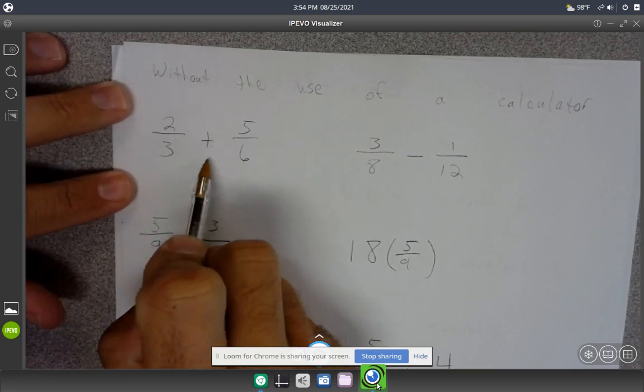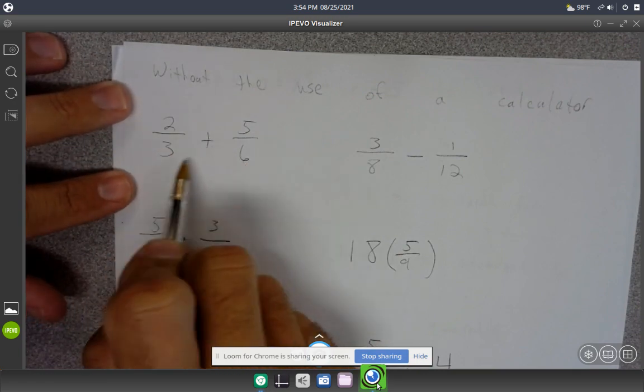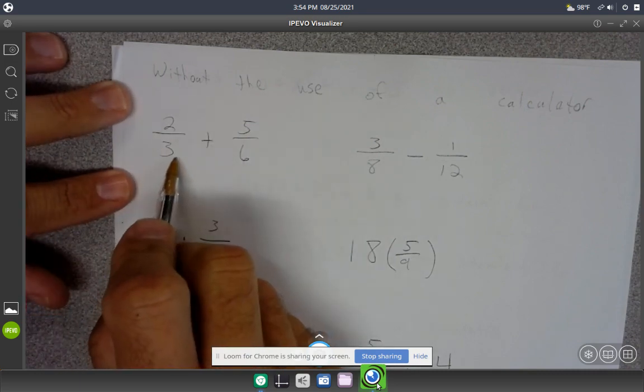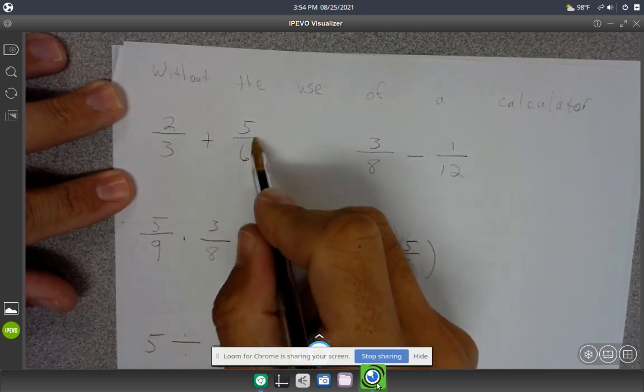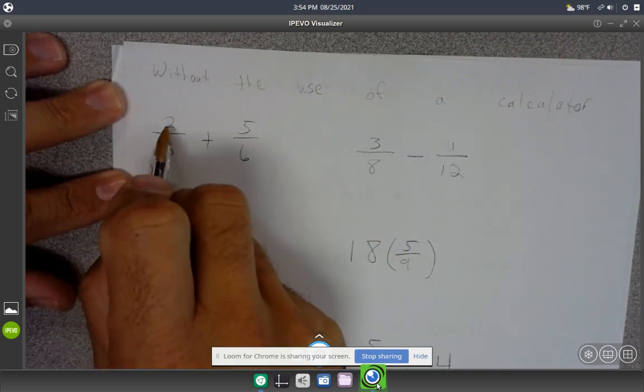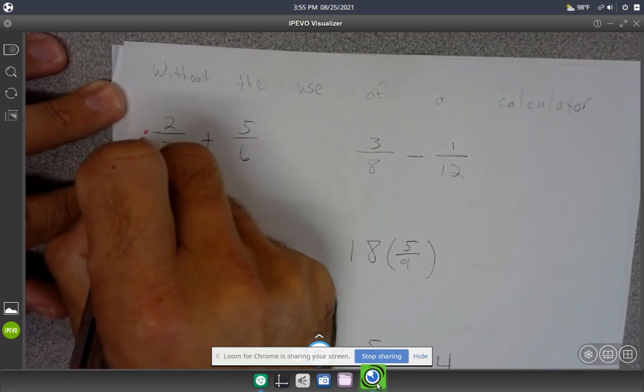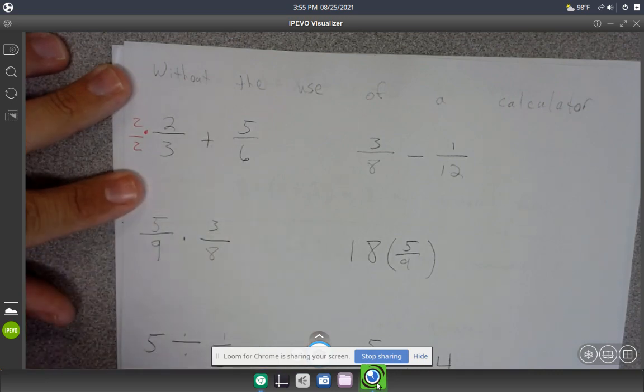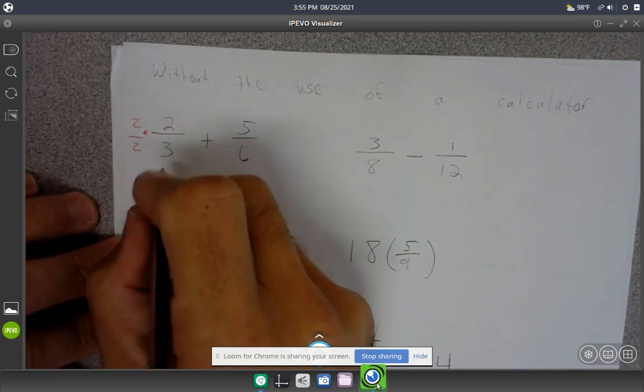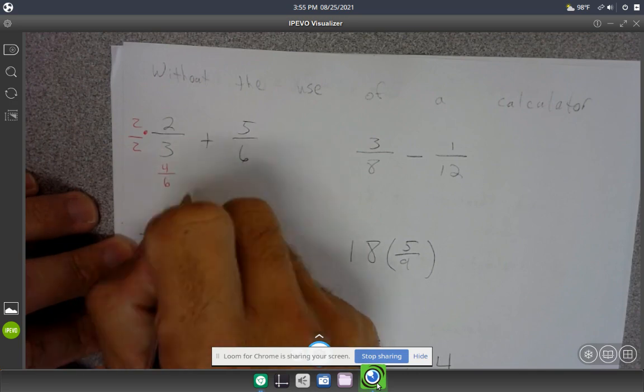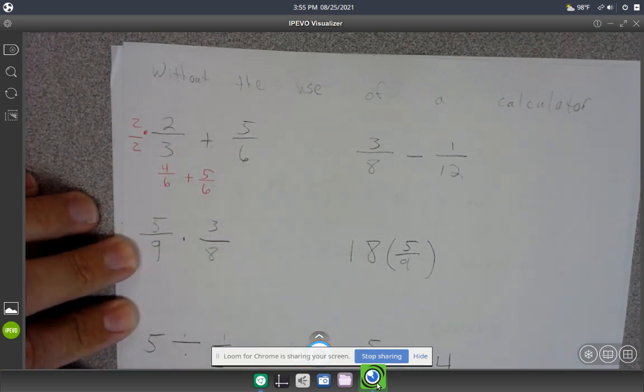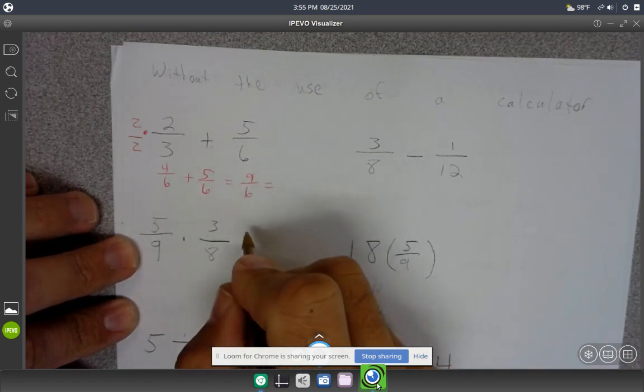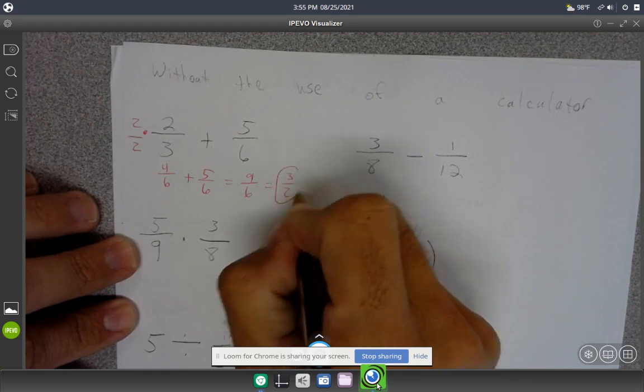For adding fractions, we need a common denominator. For 3 and 6, that's 6. I don't need to change this one, but for 2/3, to make the denominator 6, I multiply top and bottom by 2/2. That gives me 4/6 plus 5/6, which equals 9/6. Reduced down, that equals 3/2.